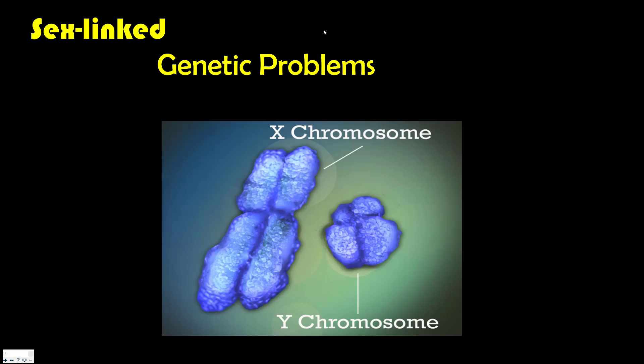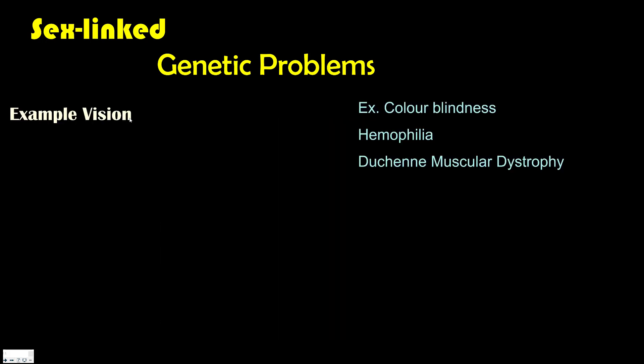The last set of genetic problems is what we call sex-linked problems. What that means is that the genes associated with the disorder are only found in sex chromosomes, and not your autosomes. So how that affects offspring is that it actually affects females and males differently, dependent on how those genes are found in the sex chromosomes. As a recap, in males you have your XY chromosome, and in females you have your XX chromosomes.